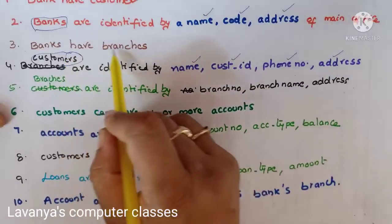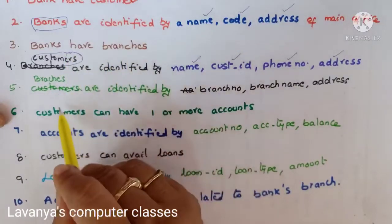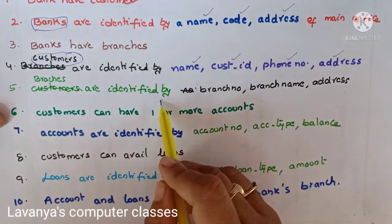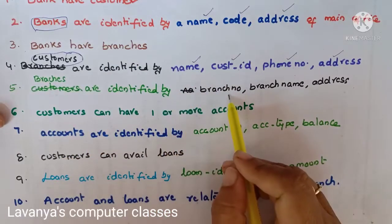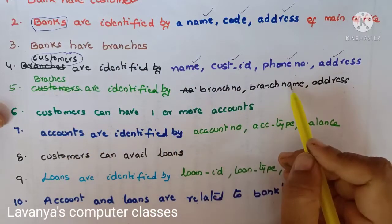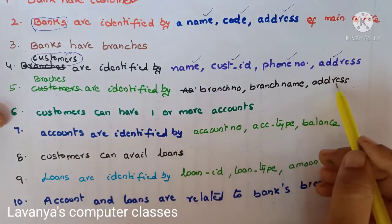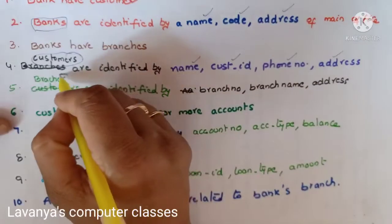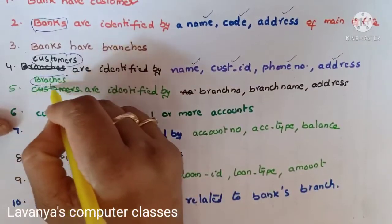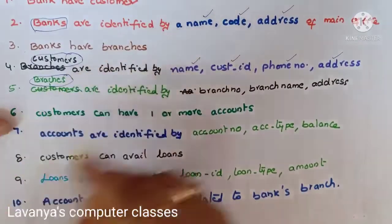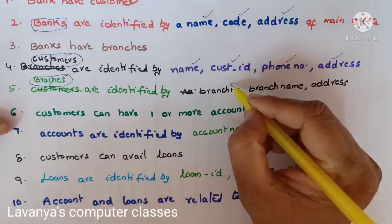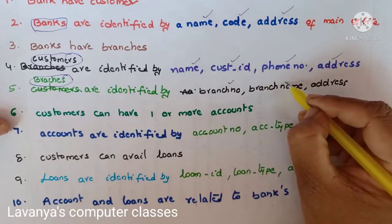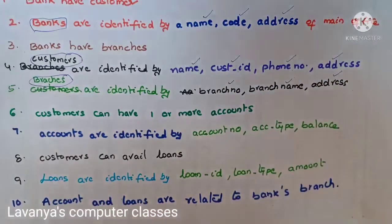Branches are identified by branch number, branch name, and address. This means branches form one more entity set. The attributes of the branch entity set are branch number, branch name, and address.